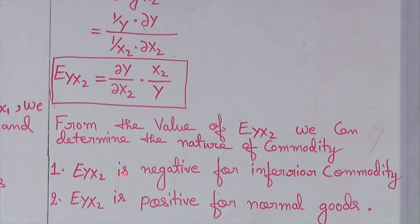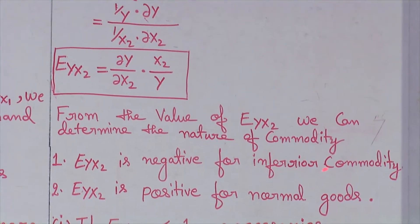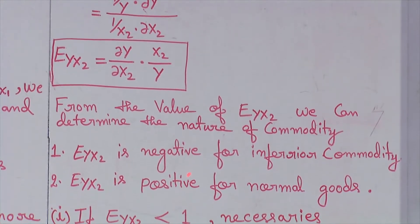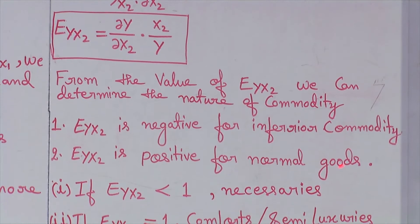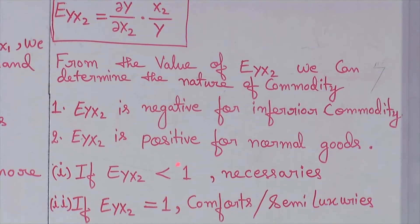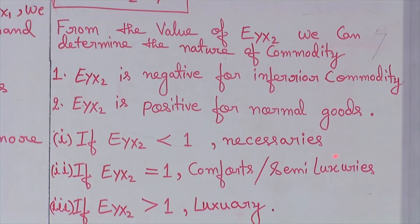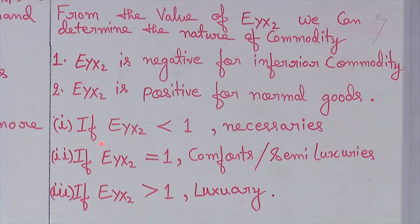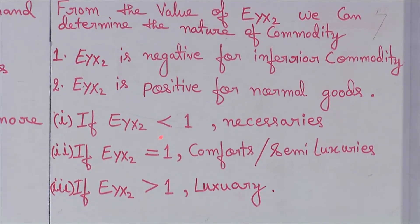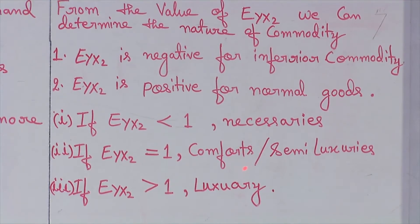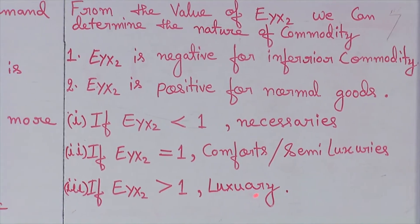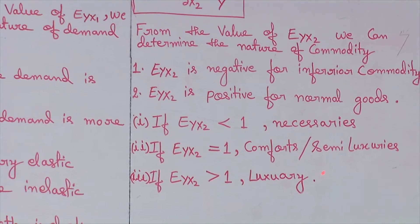If the income elasticity is negative, then the commodity is an inferior good. If it is positive, then it is a normal good. Normal goods can be classified as necessaries, comforts or semi-luxuries, and luxury goods. If the income elasticity is positive but less than 1, the good is a necessary. If the income elasticity is equal to 1, it is a comfort. If the income elasticity is positive and greater than 1, the good can be classified as a luxury.